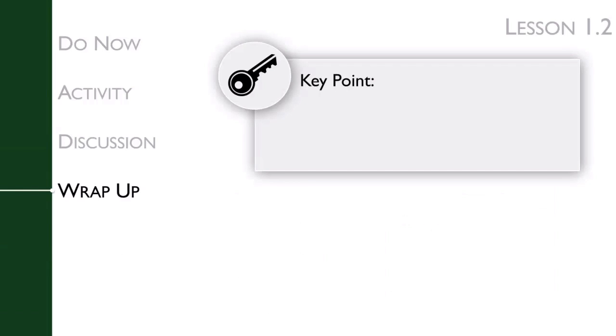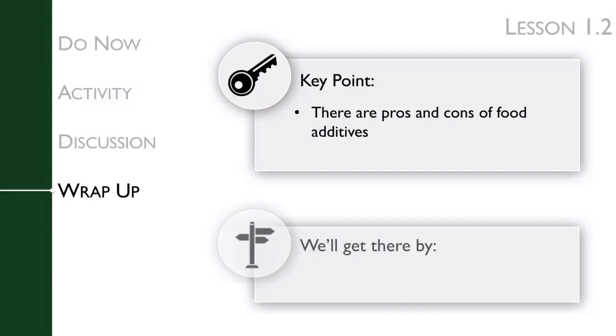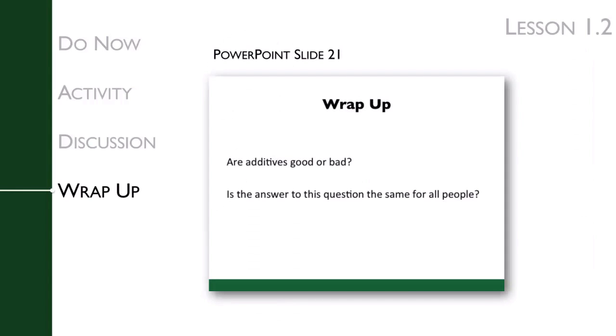The key point of the lesson's wrap-up is that there are pros and cons of food additives. We get there by having a Socratic discussion. You will ask your students whether additives are good or bad. There is no easy answer to this question, and the answer may change based on who is asking it. This concept is reiterated in the homework.